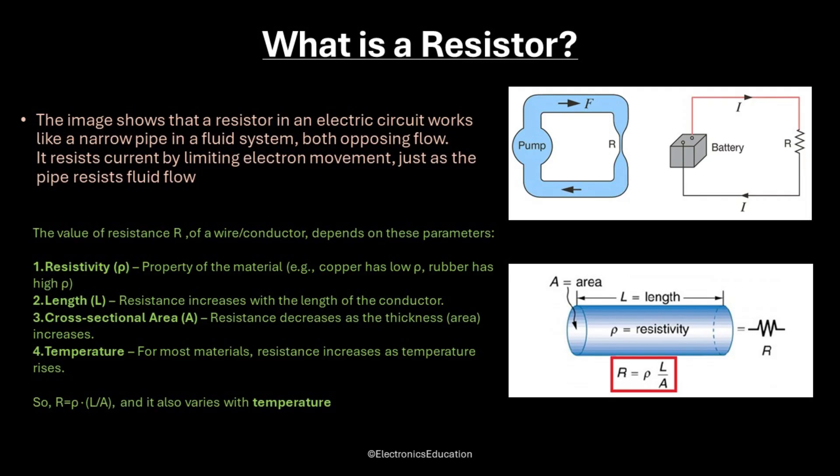The value of resistance R of a wire or conductor depends on four parameters. One, resistivity rho — a property of the material; for example, copper has low rho, rubber has high rho. Two, length L — resistance increases with the length of the conductor.